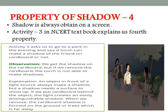Let's understand the fourth property: shadow is always obtained on a screen. Activity 3 in the NCERT textbook explains this clearly. Activity 3 asks us to go to a park in the evening and see if a torch can make a shadow of a friend on cardboard or not. Observation: we get the shadow on the cardboard, but if we remove the cardboard, the torch is not able to make shadows. Because a shadow needs a surface — it needs a screen to show up. When we remove the cardboard, the shadow is formed on the ground or trees, but they are far away.